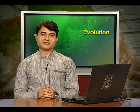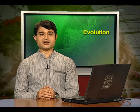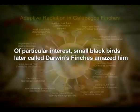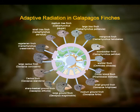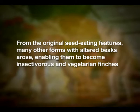During his journey, Darwin went to Galapagos Island. There he observed an amazing diversity of creatures. Of particular interest, small blackbirds later called Darwin's finches amazed him. He realized that there were many varieties of finches in the same island. All the varieties he conjectured evolved on the island itself. From the original seed-eating features, many other forms with altered beaks arose, enabling them to become insectivorous and vegetarian finches.